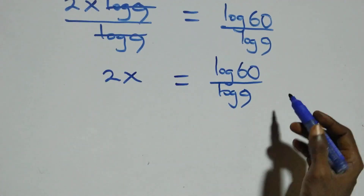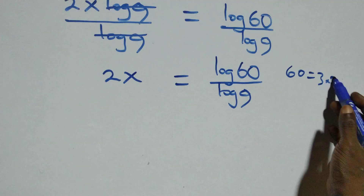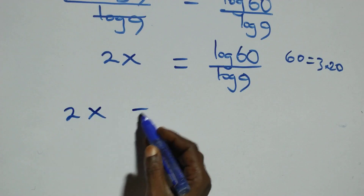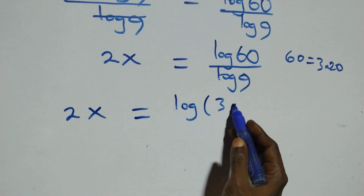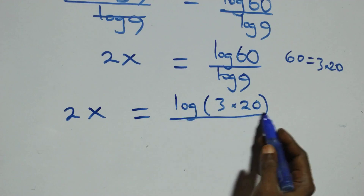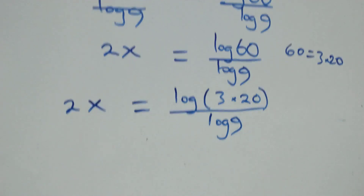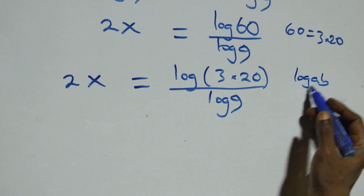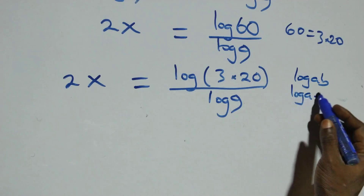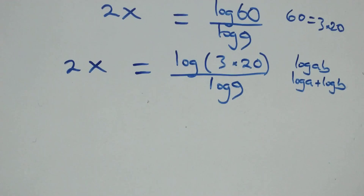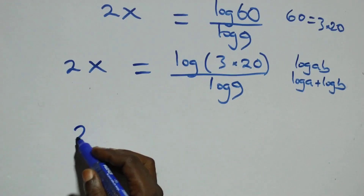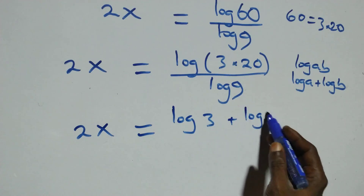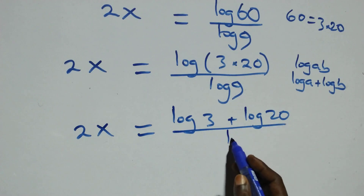From here, 60 can be written as 3 times 20. So 2x equals log of 3 times 20 over log 9. Then applying the product law of logarithm — log(a times b) equals log a plus log b — this becomes 2x equals log 3 plus log 20, all over log 9.